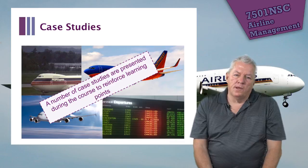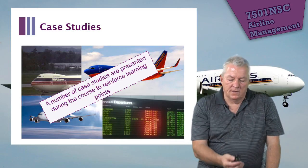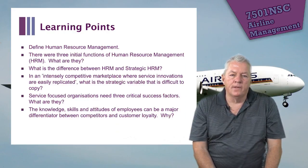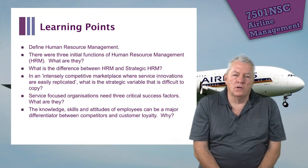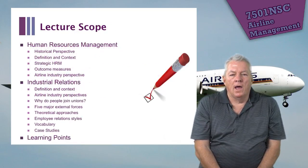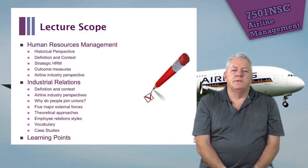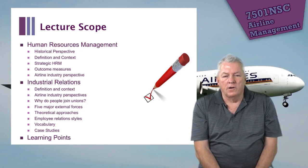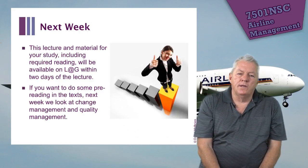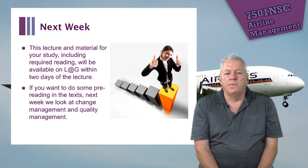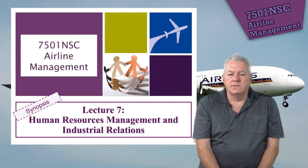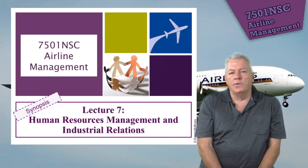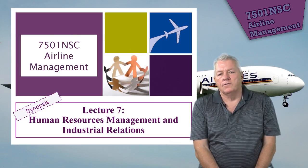In the full lecture I go through four case studies that bring out the teaching points covered so far. The learning points from the lecture are shown here. We've covered human resources management and industrial relations, and I've presented the learning points. For pre-reading, next week we look at change management and quality management. That's synopsis lecture seven — Human Resources Management and Industrial Relations. I look forward to our next synopsis lecture. Thank you.